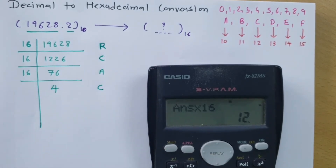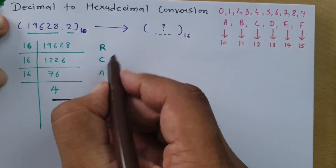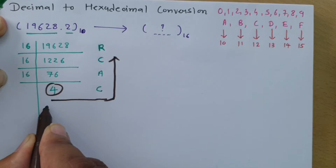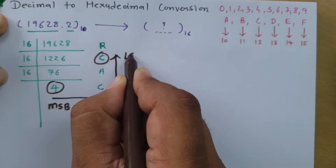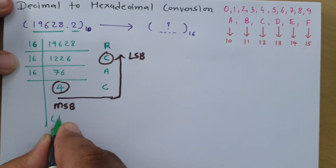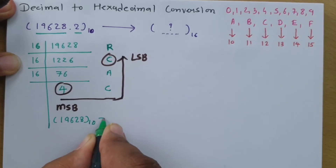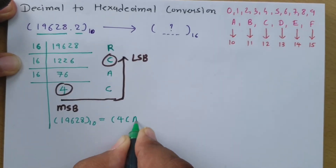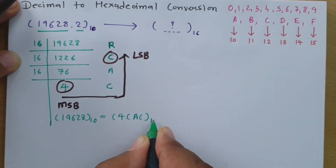We read the remainders from MSB to LSB in this direction. So 19628 in decimal is equal to 4CAC in hexadecimal.